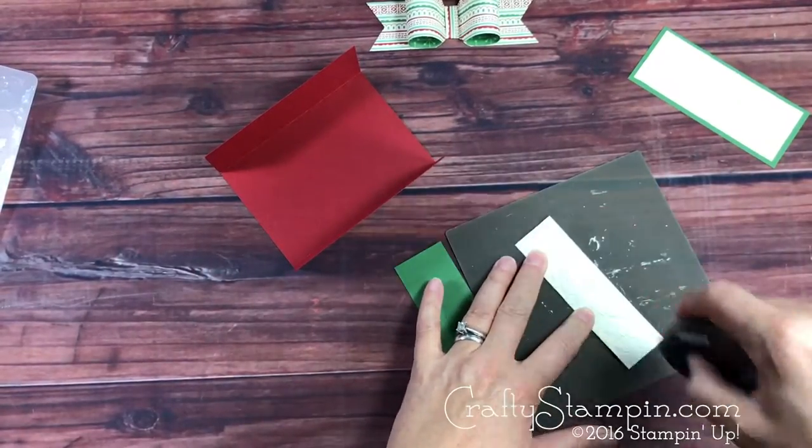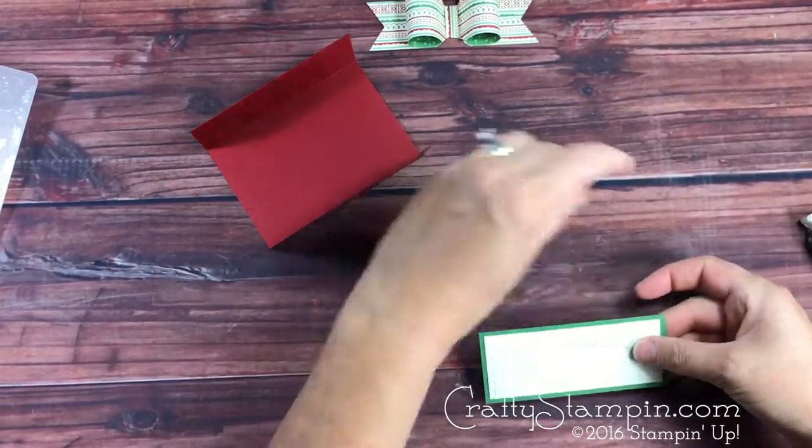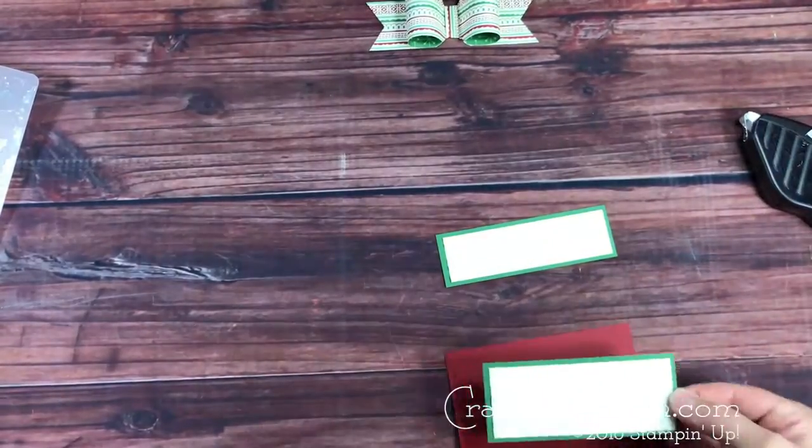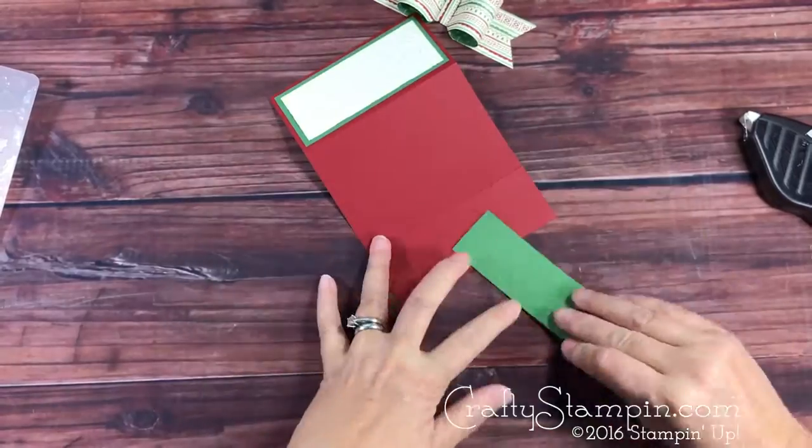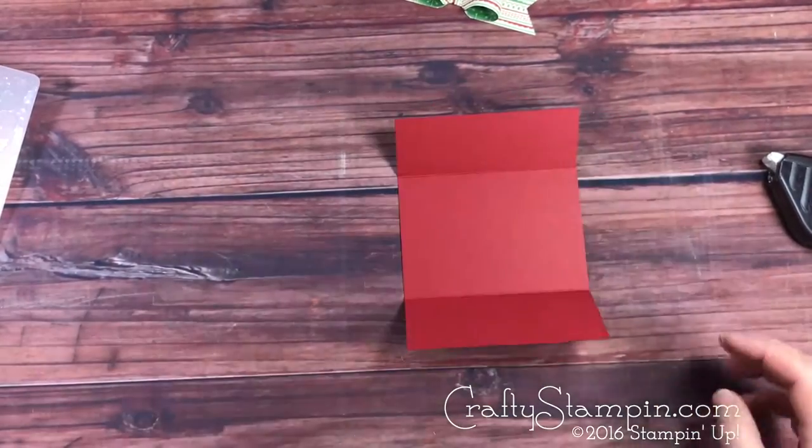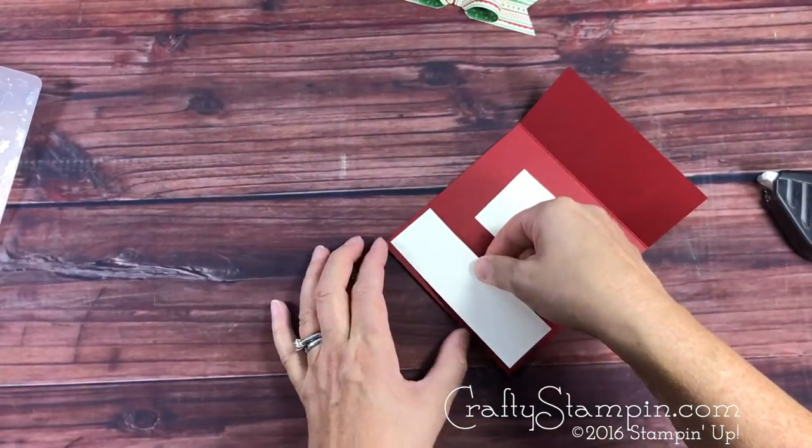I'm attaching my decorative panels to my mat with fast fuse and lining up the pattern from the embossing folder before I put it on. I'm installing it also with fast fuse. I figure this card might get manhandled a bit and I want a really strong adhesive.